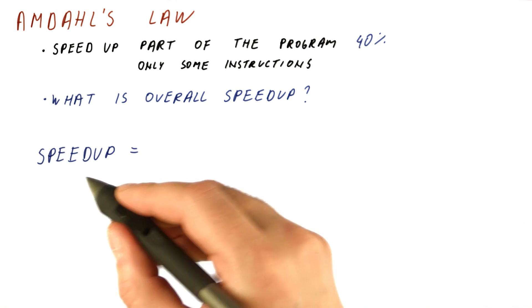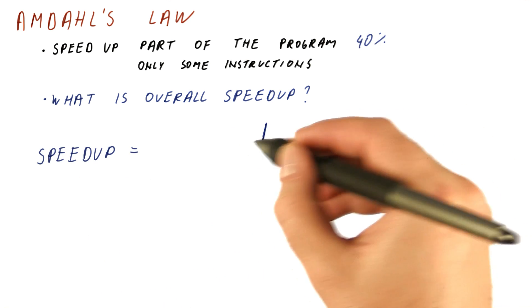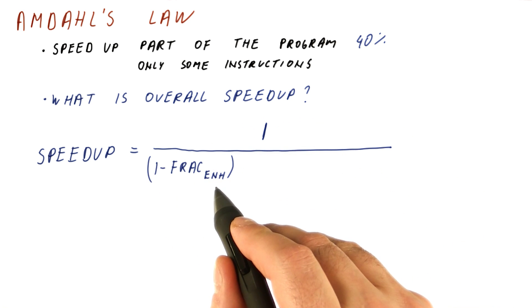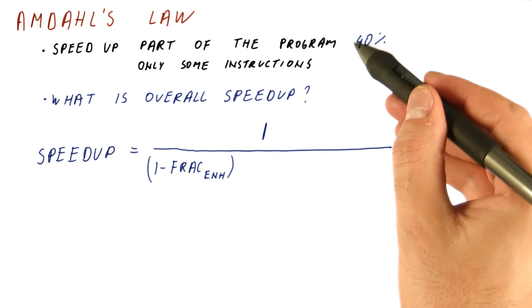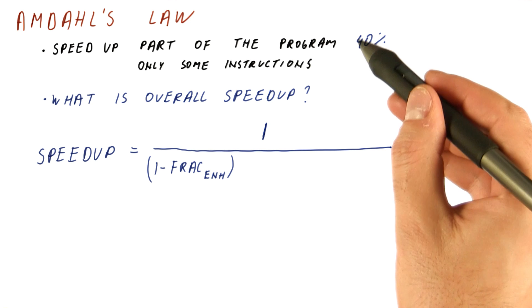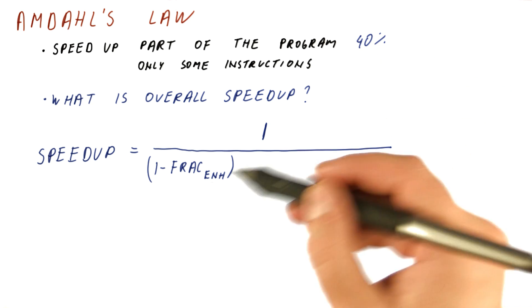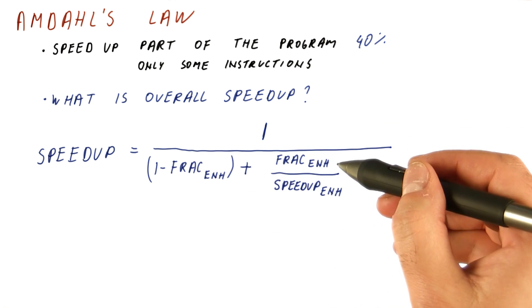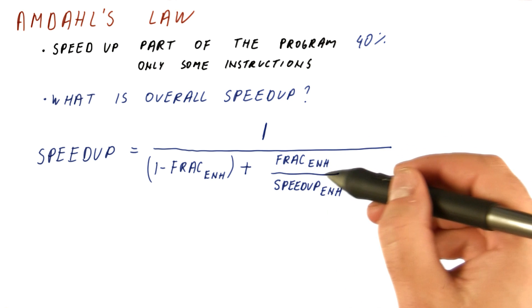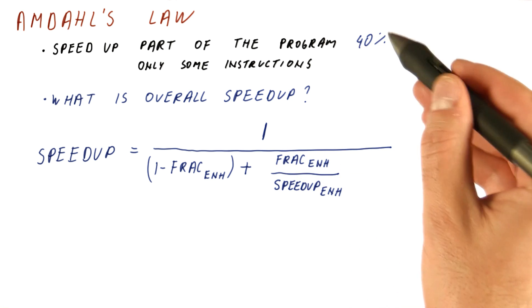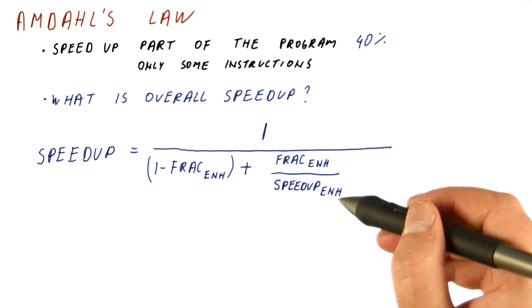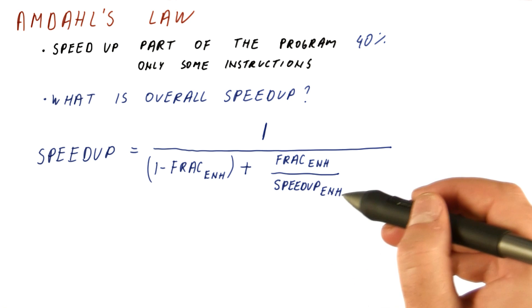The overall speed up can be computed as 1 over 1 minus the fraction of the program we didn't enhance. So for example, if we sped up 40% of the program, then this would be 60%, plus the fraction of the program we did enhance — in this case the 40% — divided by the speed up we achieve on that enhancement.